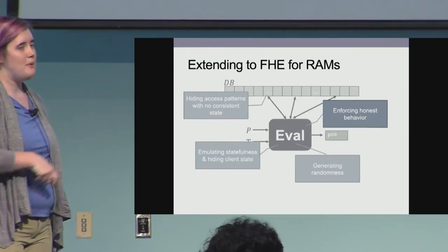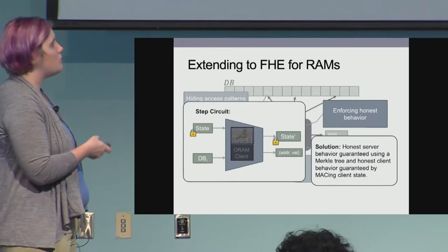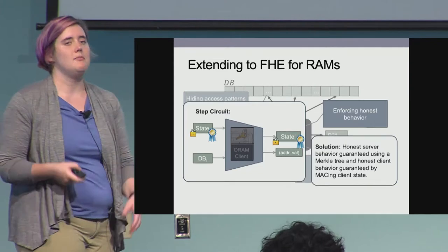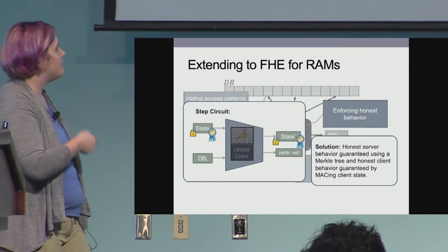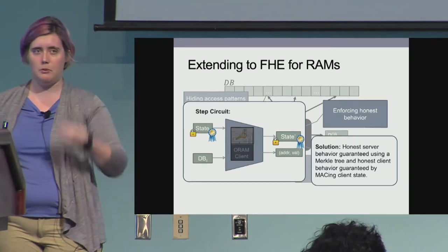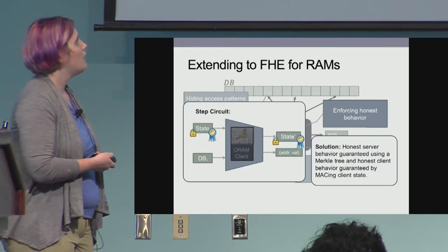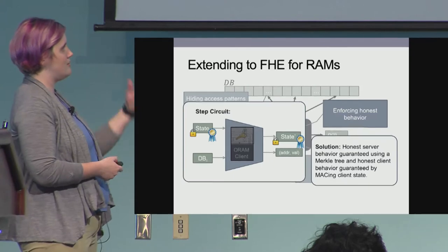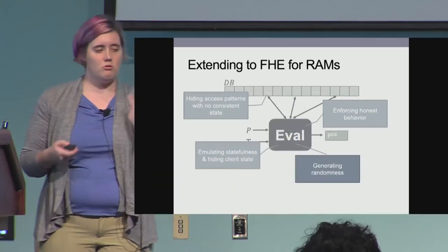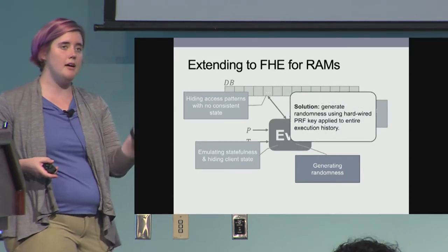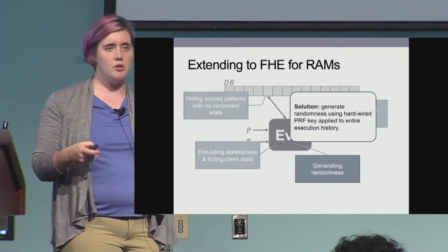We also need to enforce honest behavior for correctness and security of our rewindable ORAM schemes. We add two things to the step circuit. We add a MAC of the client state to ensure we don't mix and match state. We also instantiate a Merkle tree over the database, so any element given to the step circuit is also given its path in the Merkle tree, which the step circuit can evaluate to verify it is receiving the correct database element it asked for. Finally, we handle randomness by hard-coding a PRF key within the step circuit and applying the PRF across the entire execution history to generate unique randomness for each particular instance.